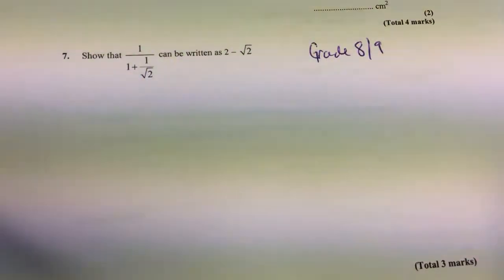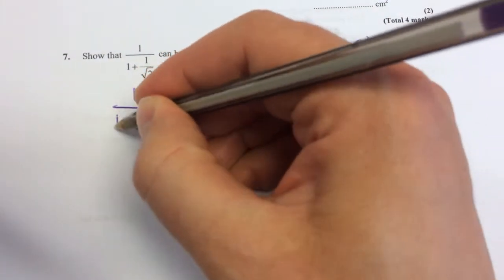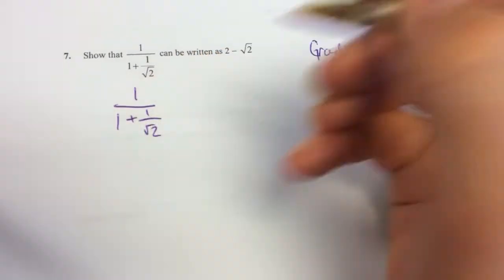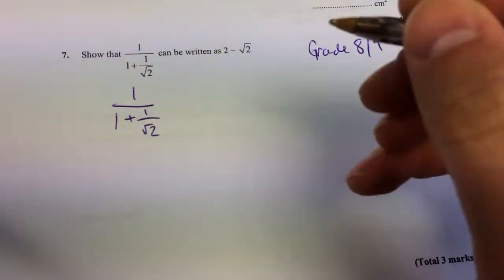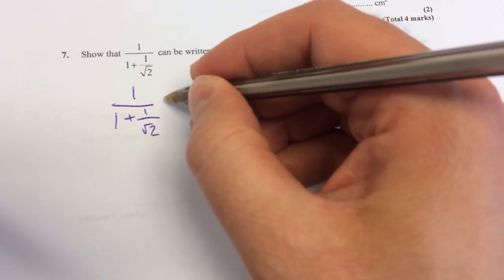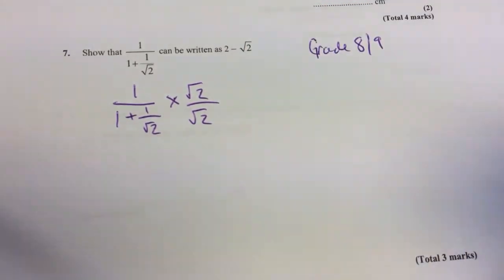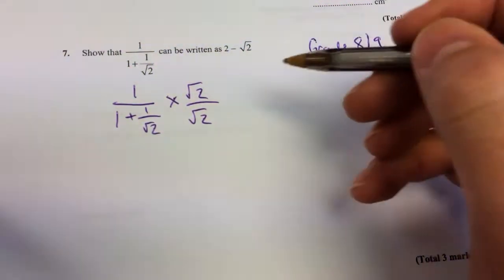My guest presenter is going to tell me what to do. First, you need to take your fraction and times it by root 2 over root 2 to effectively rationalize the denominator. Why am I allowed to do that? Well, because it's just equal to 1, so you can times it by 1.